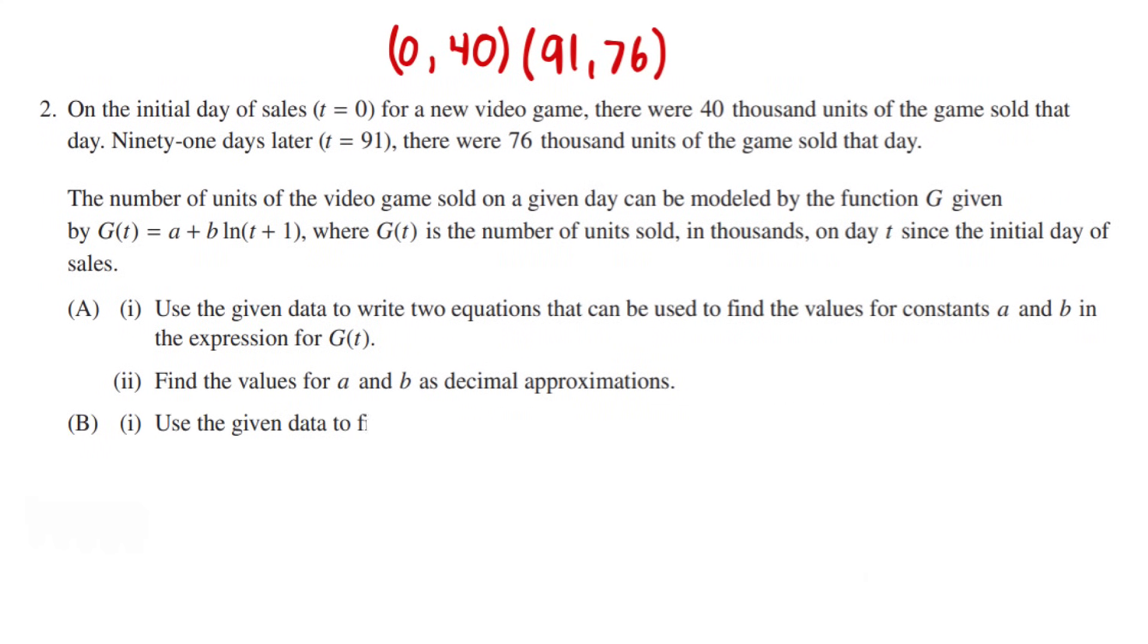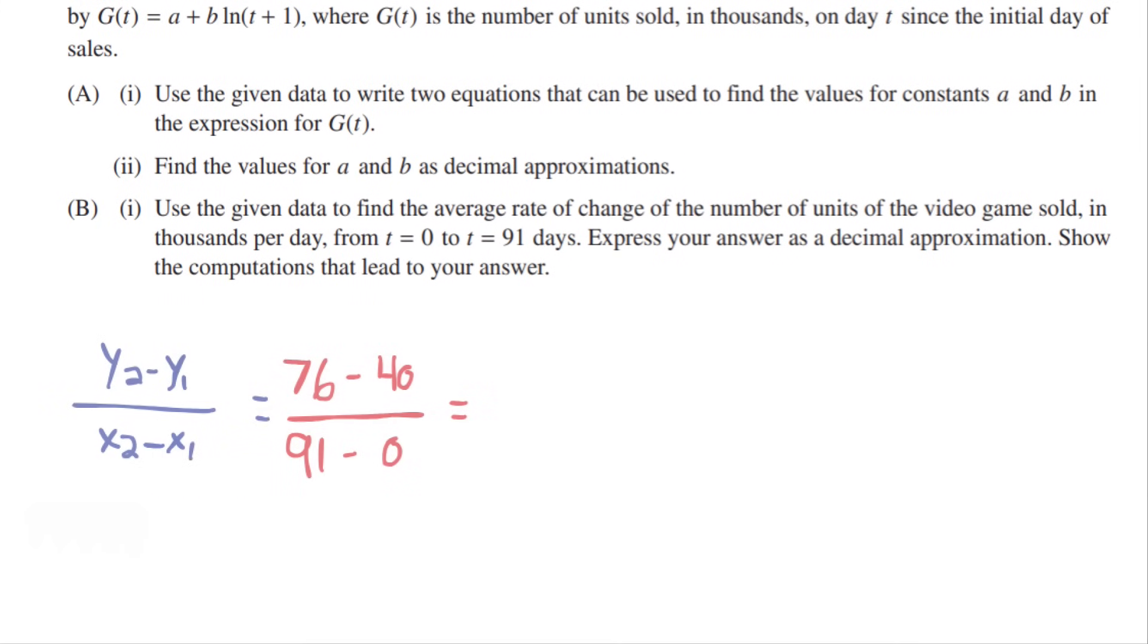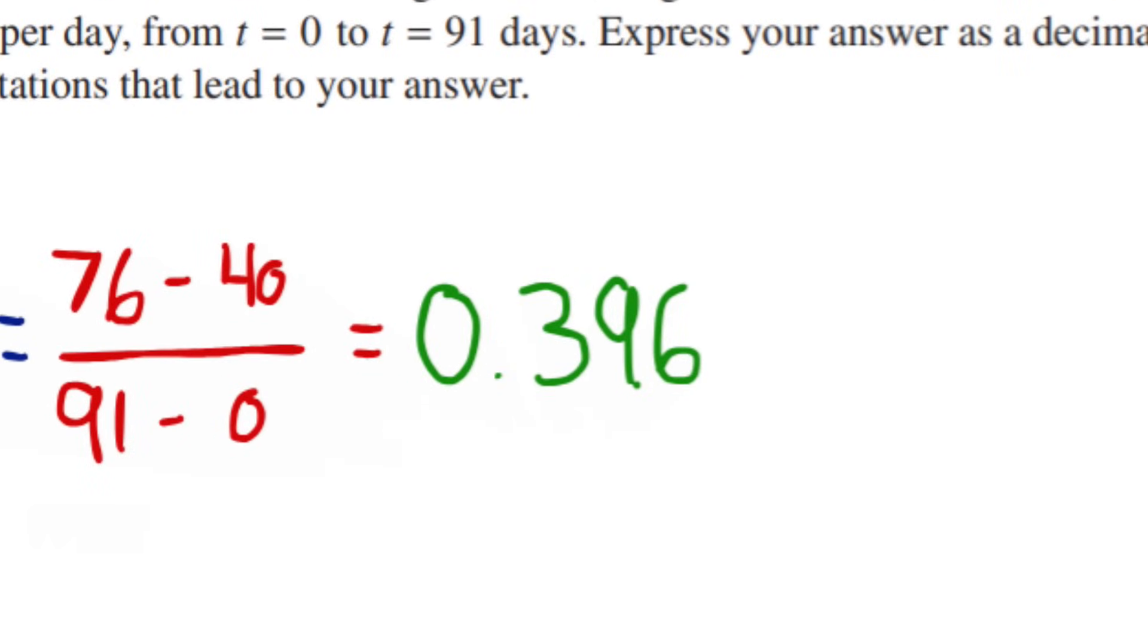Alright, next one. Use the given data to find the average rate of change of the number of units a video game sold in thousands per day from t equals 0 to t equals 91 days. Express your answer as a decimal approximation. Show the computations that lead to your answer. So this one is easy. We just plug these two points into the rate of change formula, (y2 - y1)/(x2 - x1), and solve. I'd like to mention that if you have a decimal as an answer, you always need to round it to three decimal places.